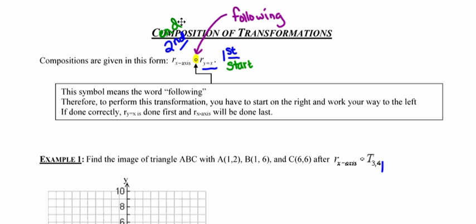However, when we're performing a composition of transformations, we're actually going to work our way from right to left. So again, the reflection in the line y equals x gets done first, whereas the reflection in the x-axis is done last.